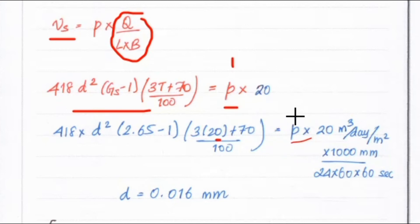P means percentage of particle removed. For 100% efficiency, we put 1 over here into 20 meter cube per day per meter square. The settling velocity is equal to mm per second. We have to convert into meter cube into mm and day into seconds.